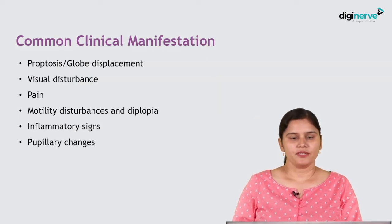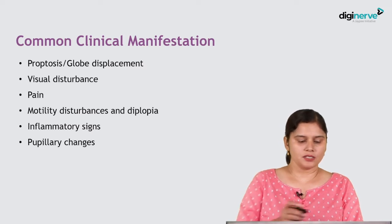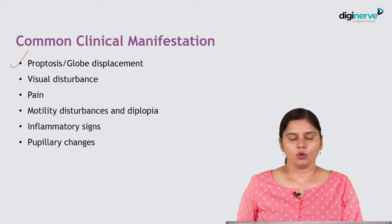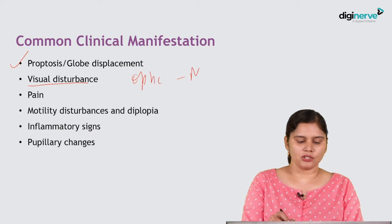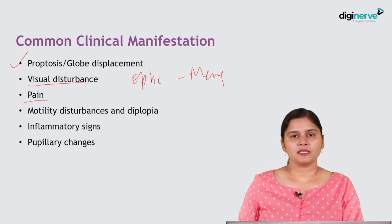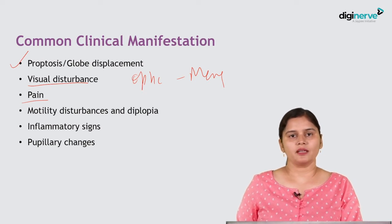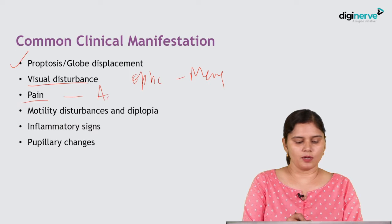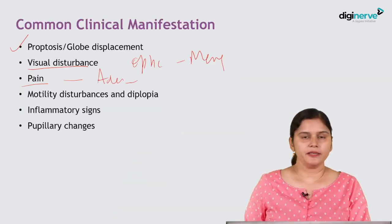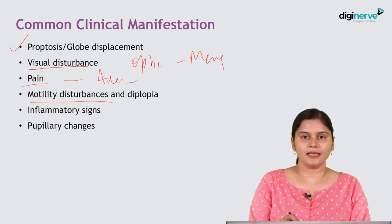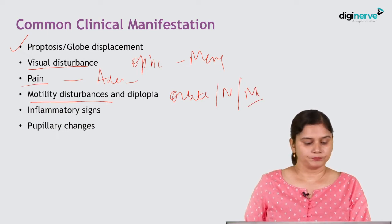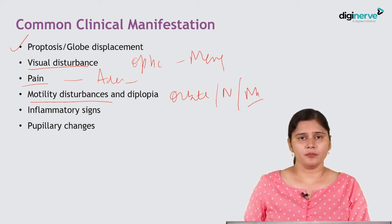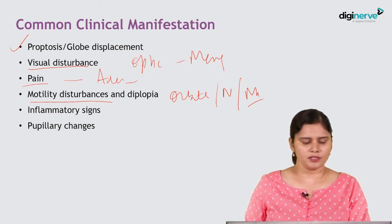The common clinical manifestation of orbital tumors is mainly proptosis. There could also be visual disturbance before proptosis in optic nerve tumors like meningiomas. Pain could be present in lesions which are either rapidly expanding or involving the nerves, like adenocystic carcinoma of the lacrimal gland. Motility disturbances can happen if the orbital apex, nerves, or muscles are involved. Inflammatory signs are rare but could be present in cystic lesions of the orbits. Pupillary changes could be present if the optic nerve is being compressed.